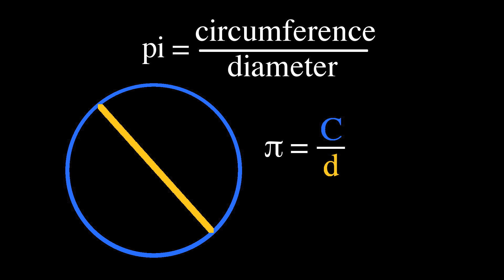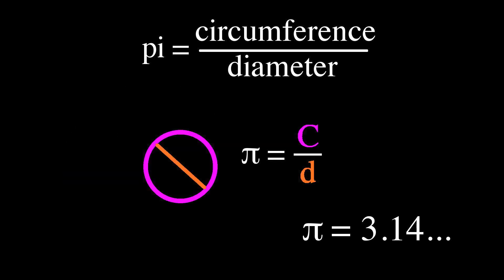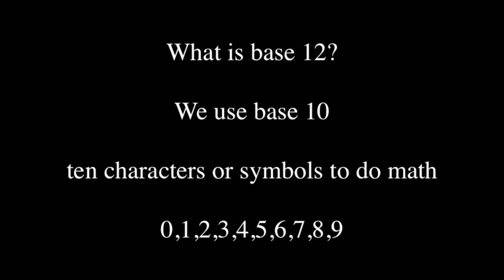Pi is the ratio of a circle's circumference divided by its diameter. No matter how big your circle is, the ratio is always the same. It's about 3.14, but there are different ways to express this value. We use base 10, which means we have 10 symbols or characters to do math — 0 through 9. But you could use any number of symbols.